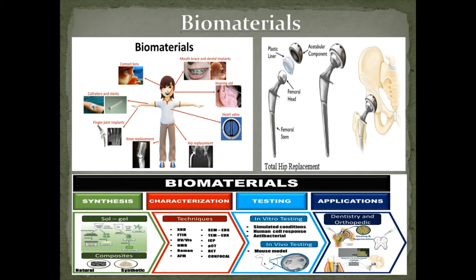Biomaterials science encompasses elements of medicine, biology, chemistry, tissue engineering, and materials science. Biomaterials professionals are tasked with designing and developing materials that are suitable for use within the human body. These implant materials must be completely safe for patients — meaning the absence of carcinogenic properties and toxins. Implant materials also need to be structurally sound so that they can last a lifetime, and must be chemically stable and inert.